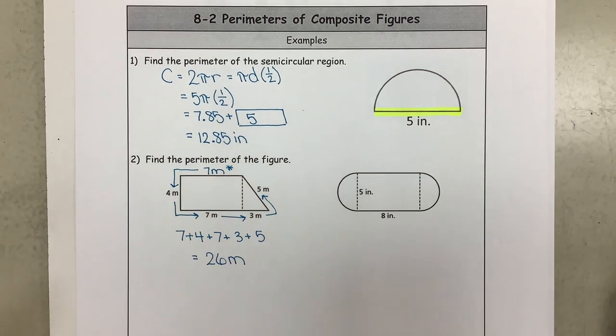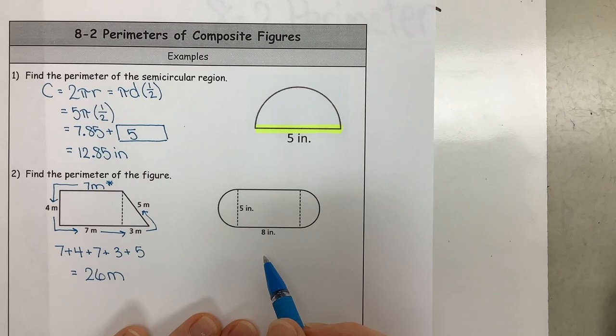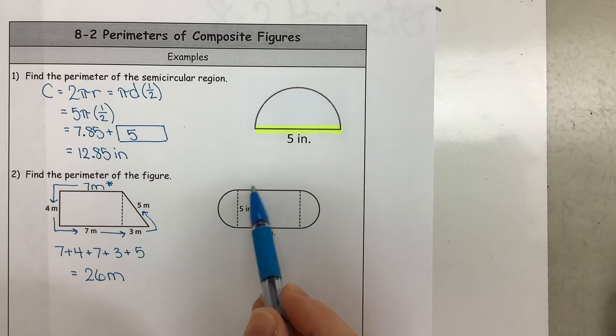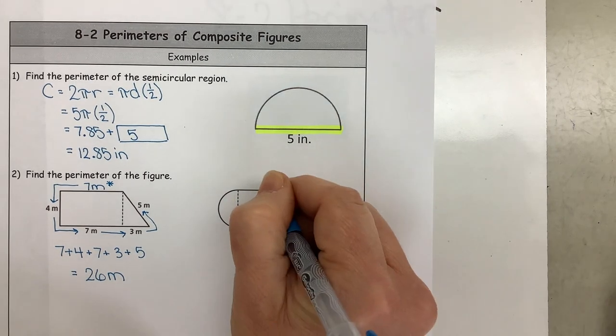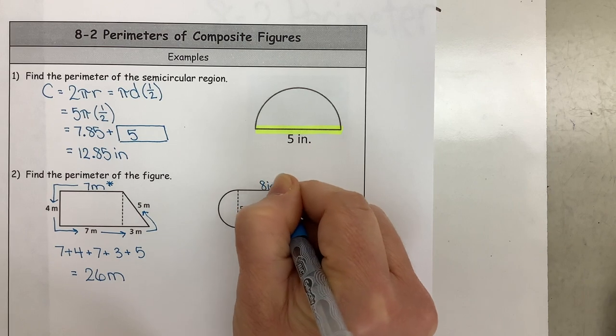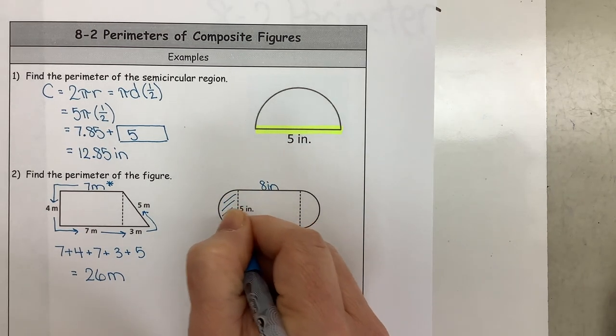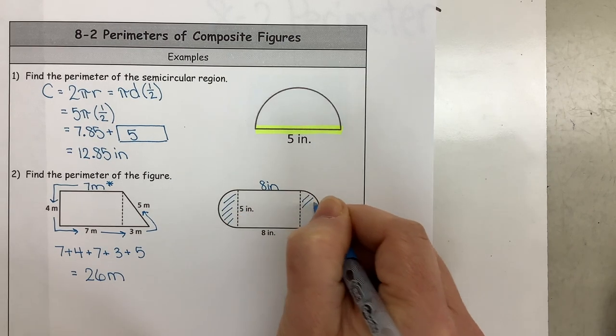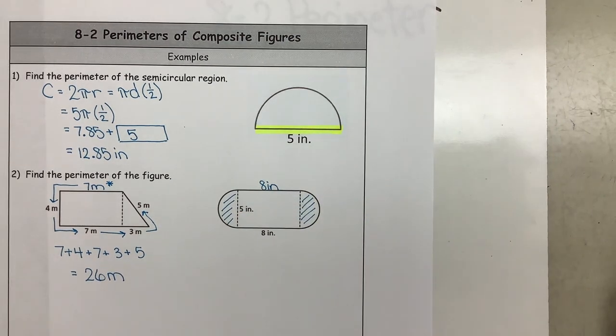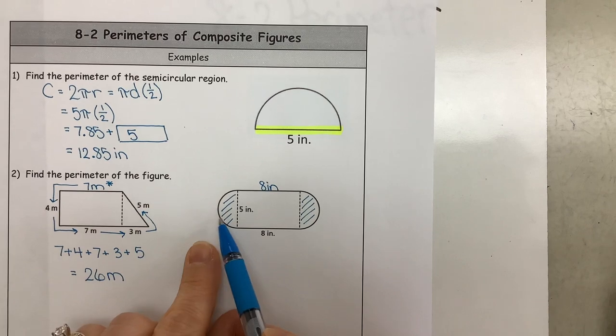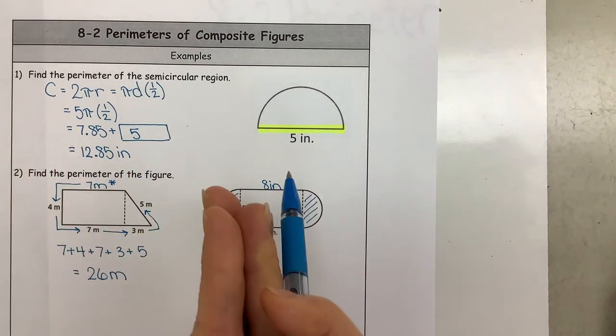And that's all we have to do for this problem. Now the other one we're going to do is this one. I can see that I have this rectangle shape so I know this is 8 inches. I can also see that I have this here which is a circle, and since it was a semicircle but when we put them back together we have one circle.